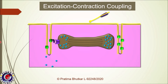These calcium ions combine with troponin C and initiate the process of muscle contraction. So the events from depolarization of the muscle fiber until the release of calcium into the sarcoplasm are included in excitation-contraction coupling.